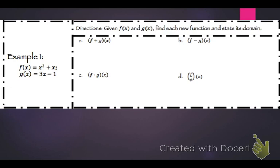Given f of x and g of x, find the new function and state its domain. If we have f plus g of x, that's the same as f of x plus g of x. So that's x squared plus x plus 3x minus 1. Combining terms gives x squared plus 4x minus 1. The domain there is negative infinity to positive infinity.